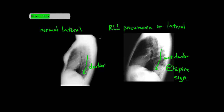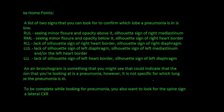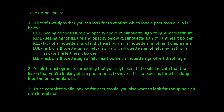Hopefully this was helpful and you can now identify which lobe a pneumonia is in. For the take-home points: a list of two signs to look for to confirm which lobe the pneumonia is in is provided below for your reference. Second, an air bronchogram is something you might see that could indicate the lesion is pneumonia, however it is not specific for which lung lobe the pneumonia is in. Finally, you also want to look for the spine sign on a lateral chest x-ray. Thank you.